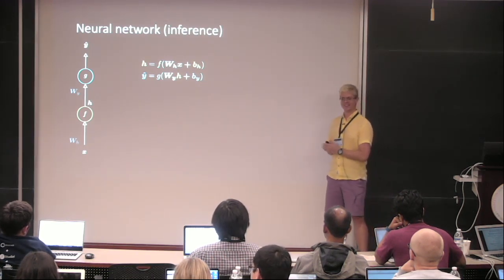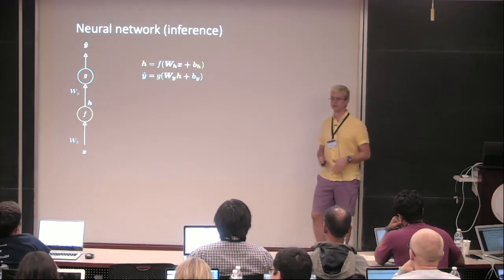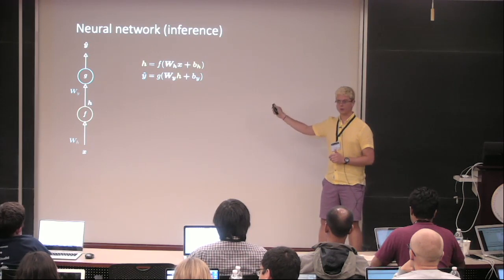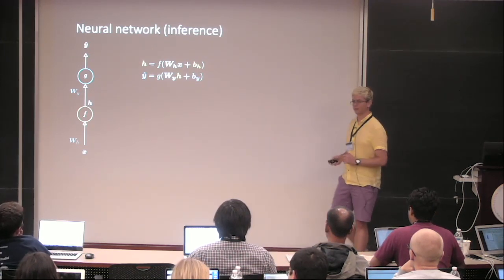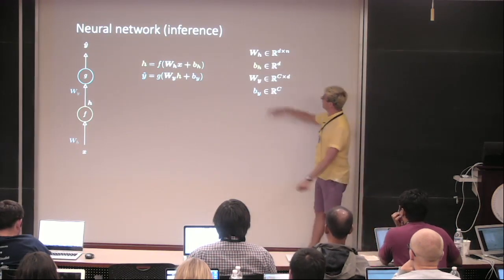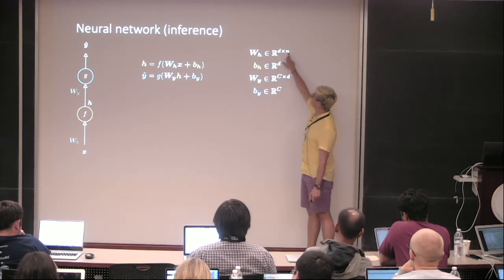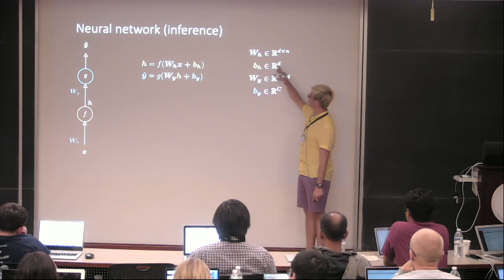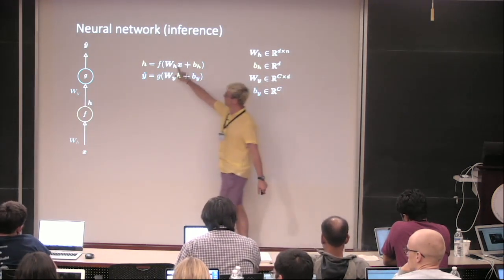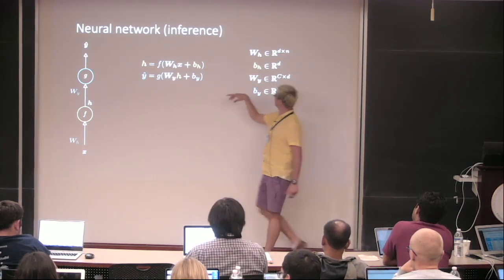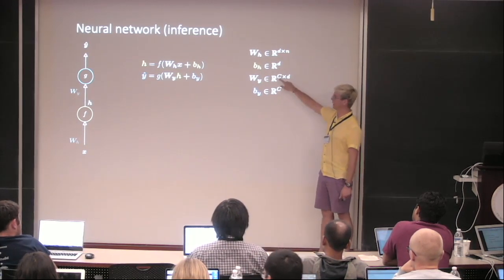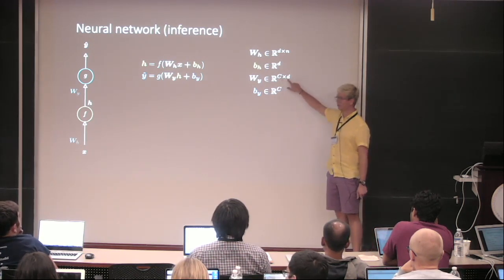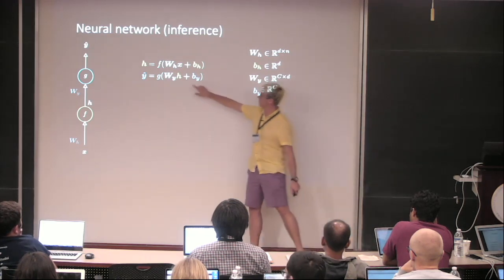So that's basically a neural network — there's not much more than this. W_h maps from the input space N to the internal space D. The bias is also on size D because we sum the linear transformation from N to D with a vector of size D. The output layer maps from D to C classes, because we expect the one-hot style representation. And C classes going from D — the bias there is also capital C in size.